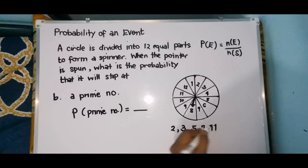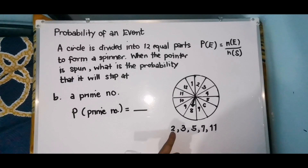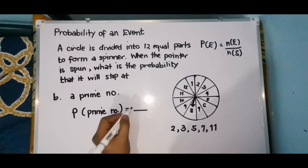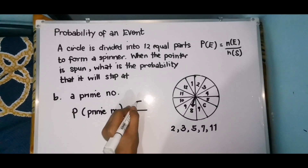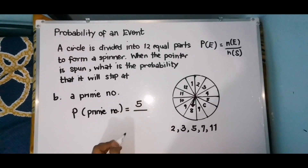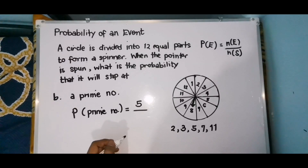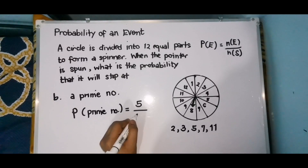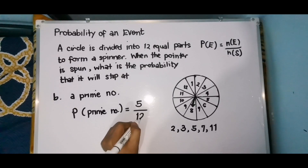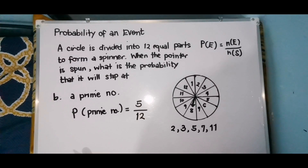Ito yung mga prime numbers. So how many? There are 5 prime numbers. So the probability of getting a prime number is 5 over 12. So that will be our answer.